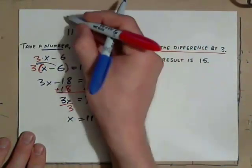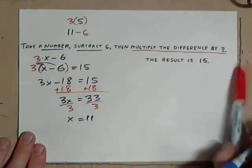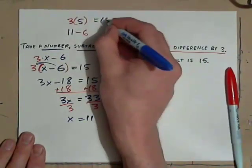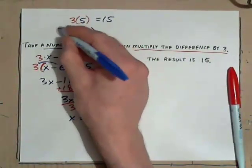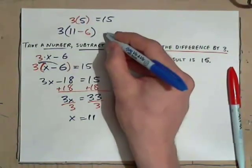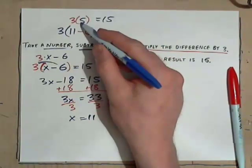Multiply the difference by 3. Multiply 3 times that difference, 3 times 5, we get 50. So, obviously, we should have put parentheses around the 11 minus 6. Now, 3 times that, you know, would be 3 times 5, 15.